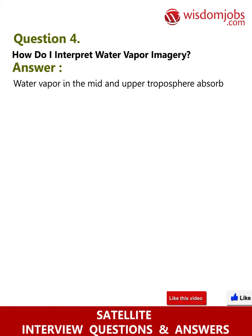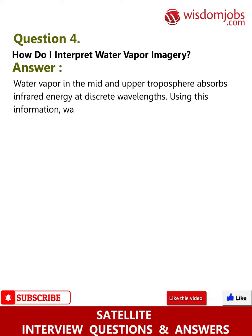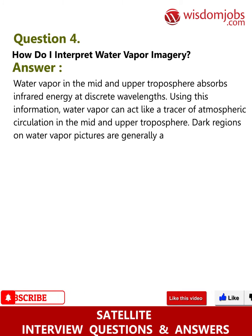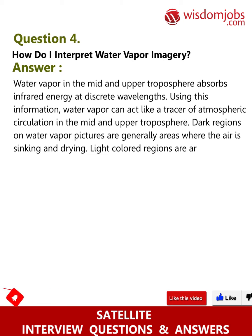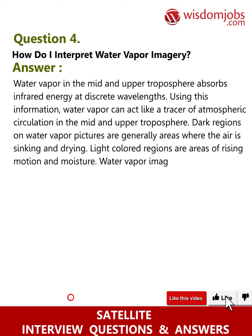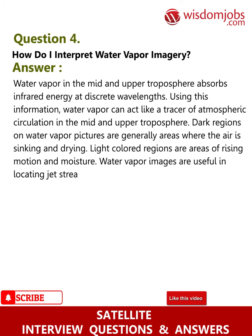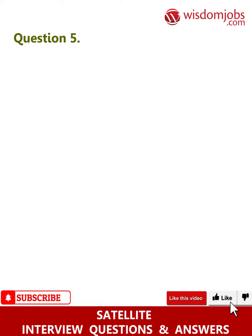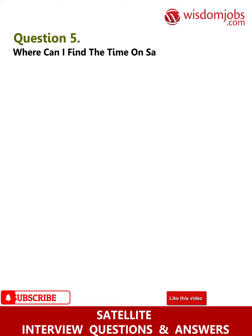Question 4: How do I interpret water vapor imagery? Answer: Water vapor in the mid and upper troposphere absorbs infrared energy at discrete wavelengths. Using this information, water vapor can act like a tracer of atmospheric circulation. Dark regions on water vapor pictures are generally areas where air is sinking and drying; light colored regions are areas of rising motion and moisture. Water vapor images are useful in locating jet streams and shortwave troughs and ridges, but are poor for seeing clouds near the ground such as stratus.